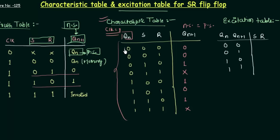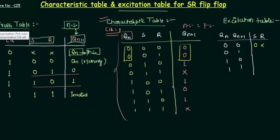When QN is 0 and QN+1 is 0, looking at the characteristic table, I can see that the value of S is always 0, so S equals 0. But the value of R is 0 and 1, so R is a don't care, written as X. When QN is 0 and QN+1 is 1, in this case S is 1 and R is 0.